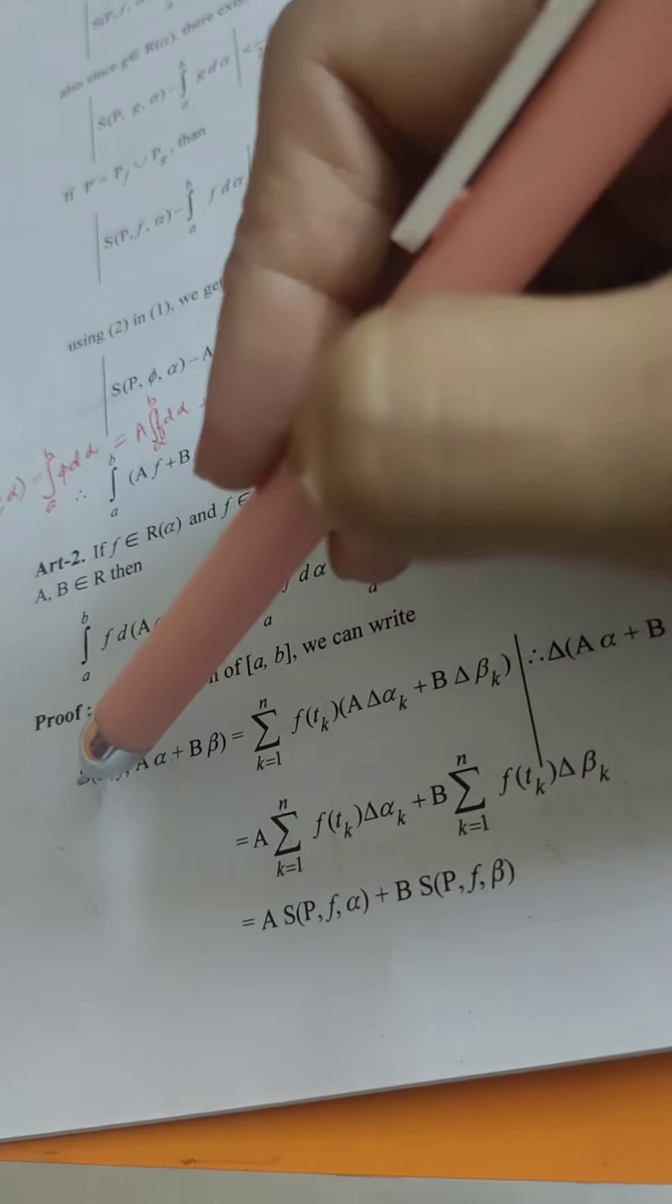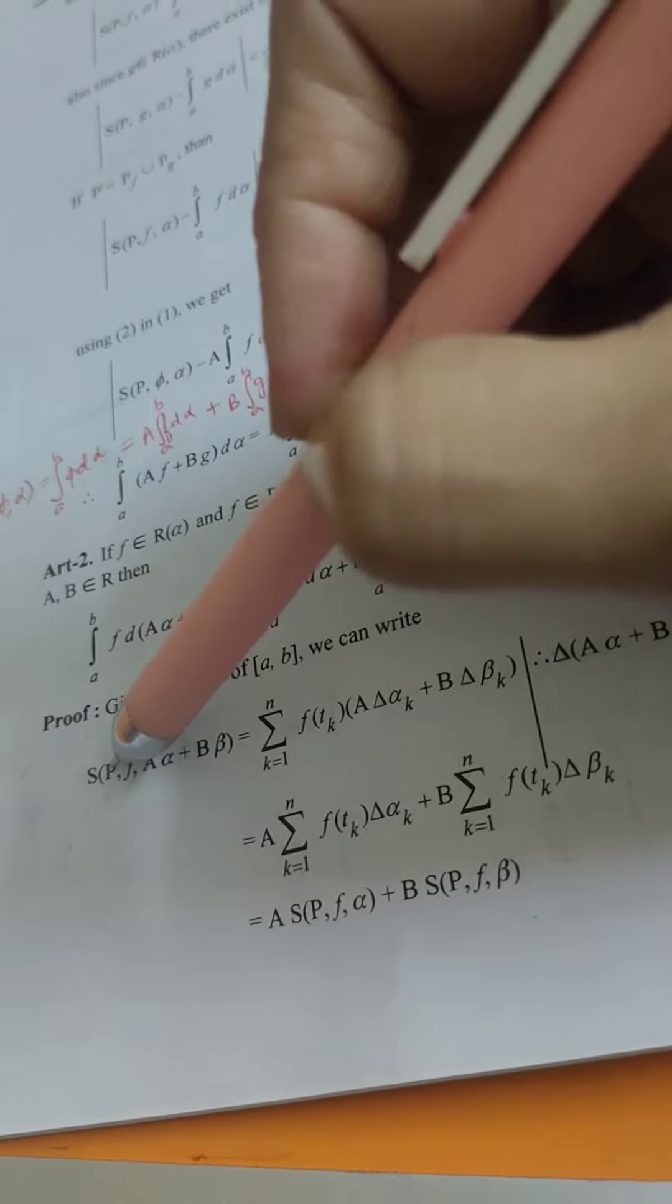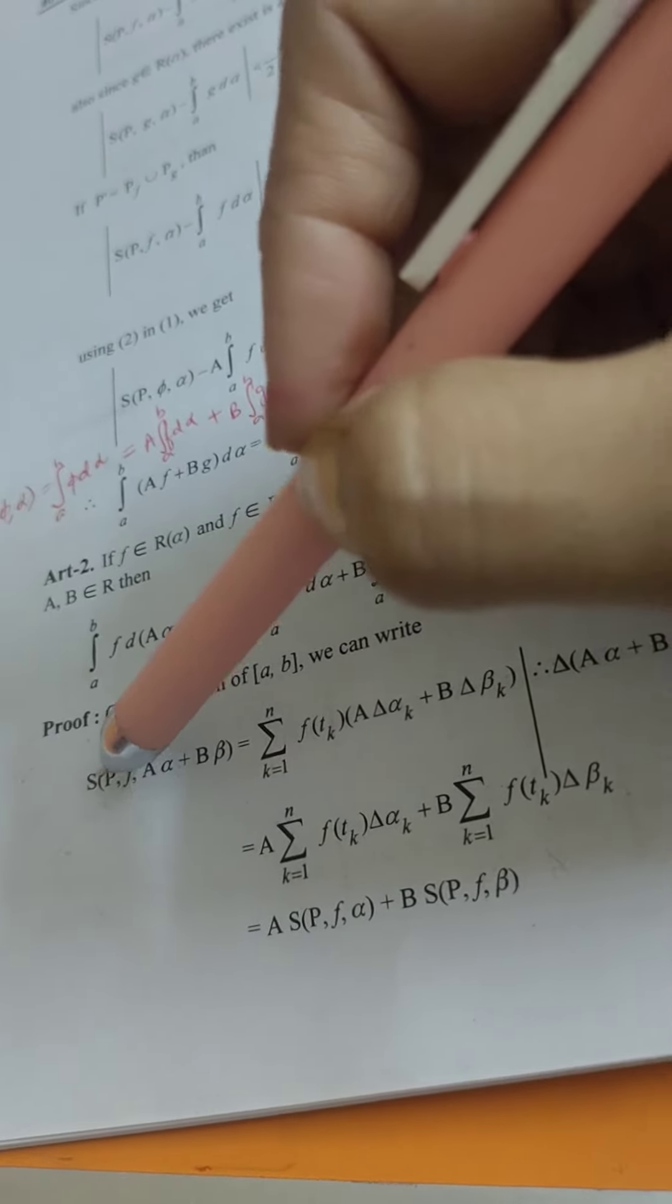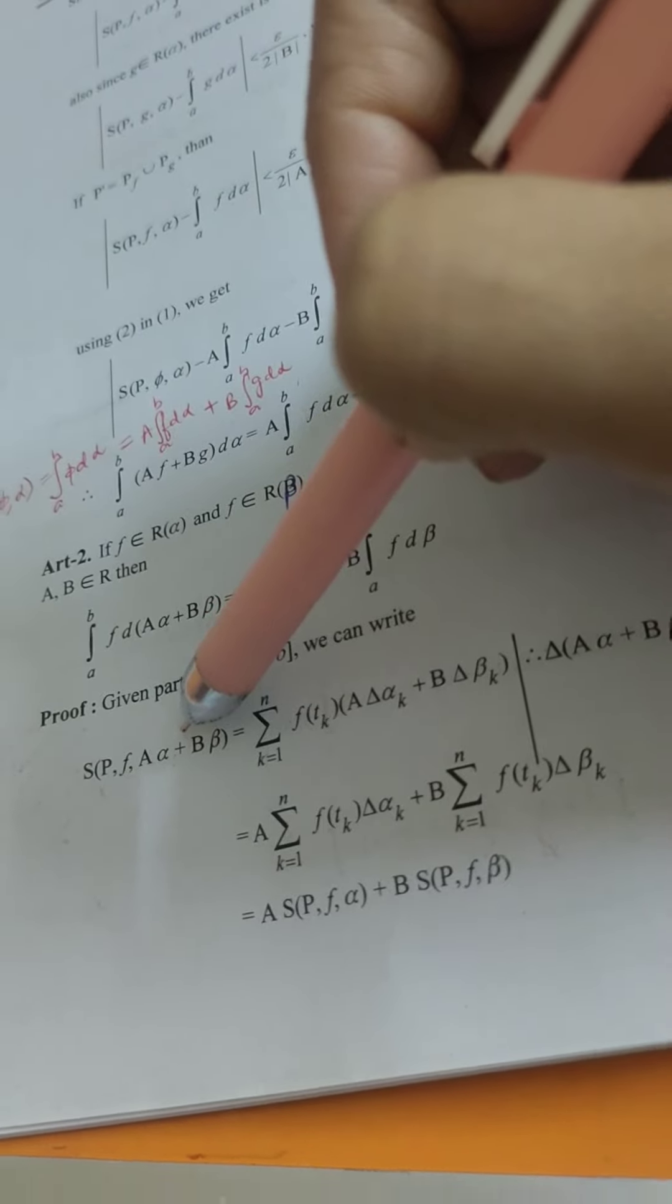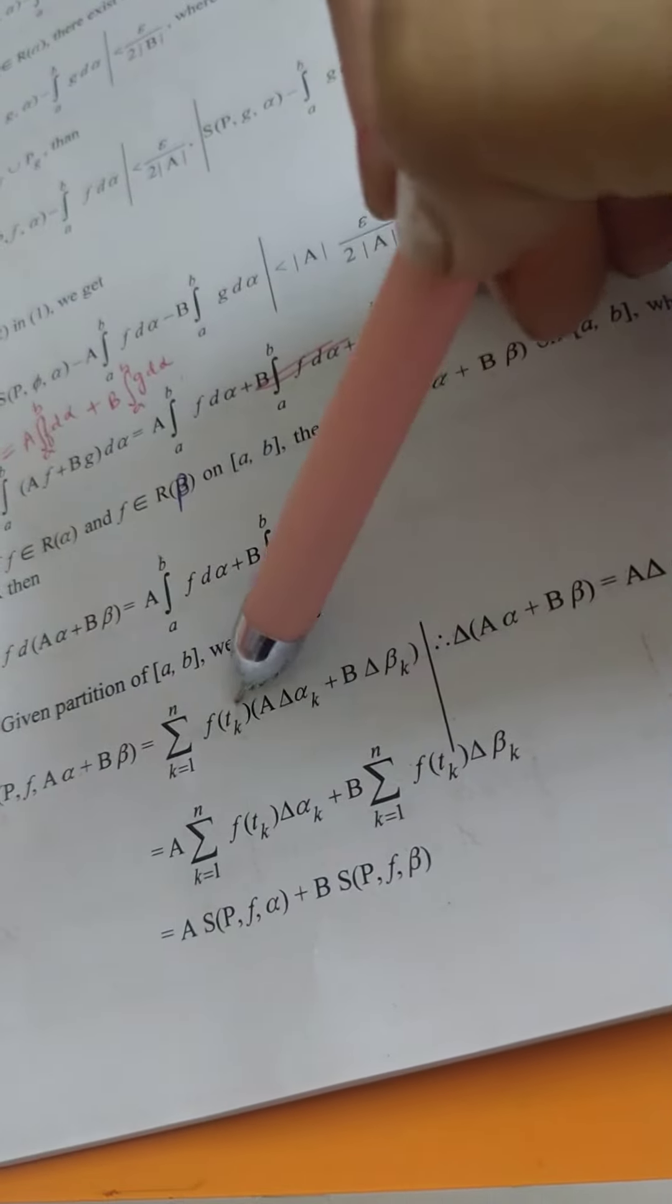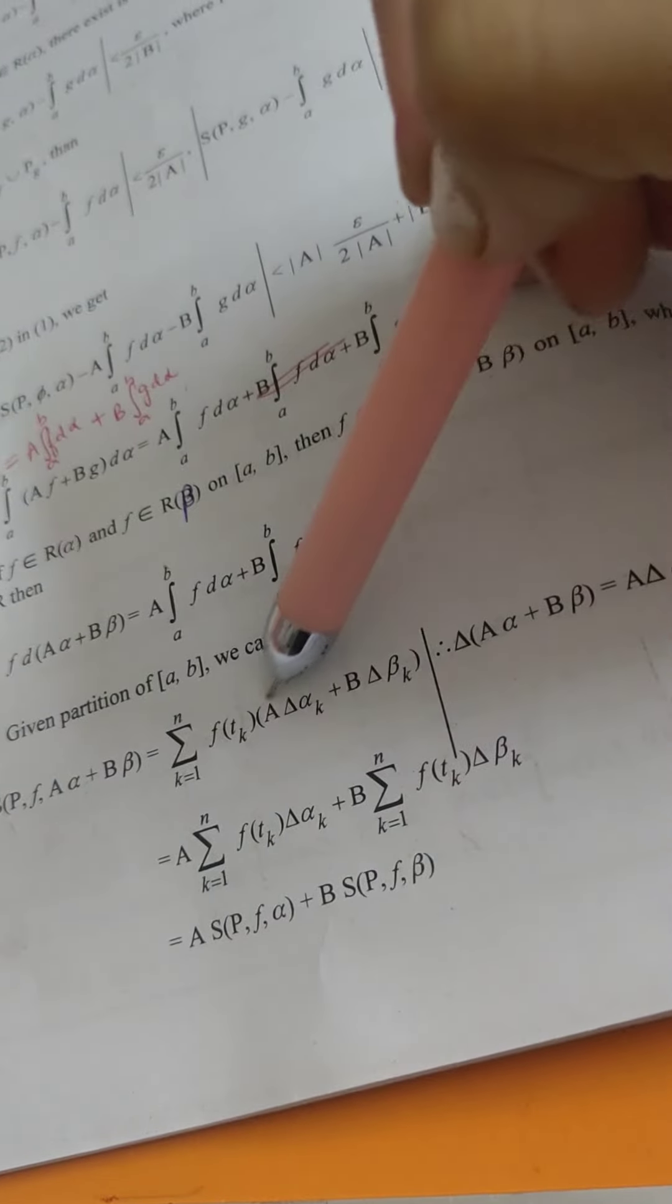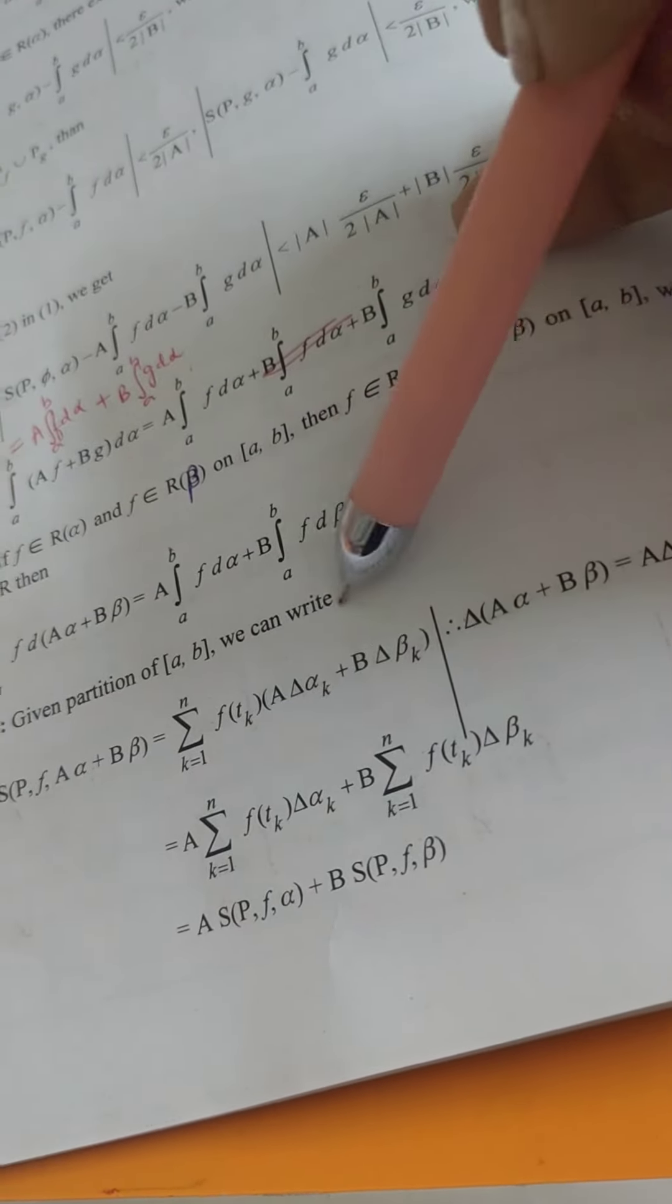So definition me aapne pichli bar nikala tha S(P, f, alpha). So yaha par ab f ki jaga toh wohi f hi rahega, alpha ki jaga a alpha plus b beta. Definition lagayenge - definition me bhi aapka yaha par delta alpha_k aata hai waise toh normally.